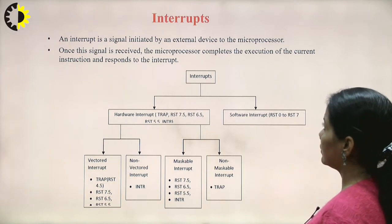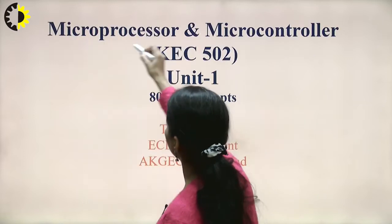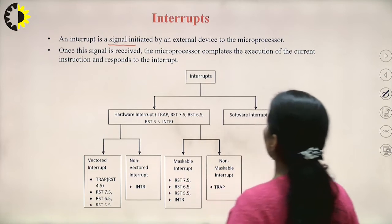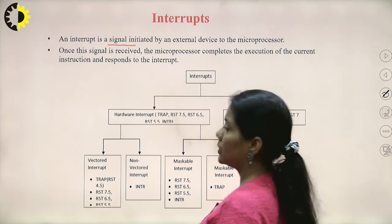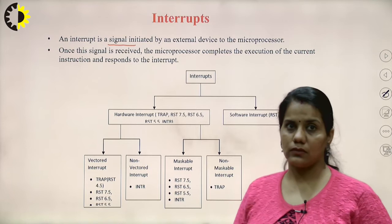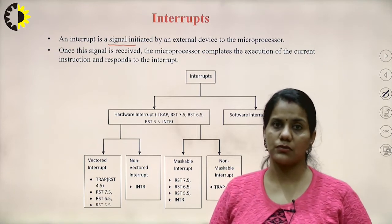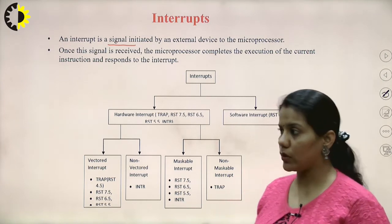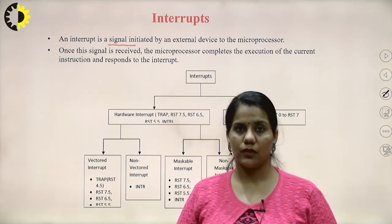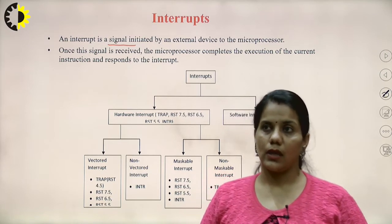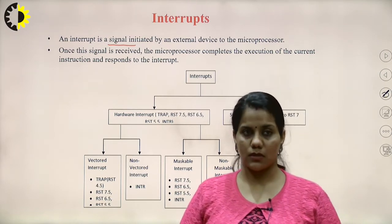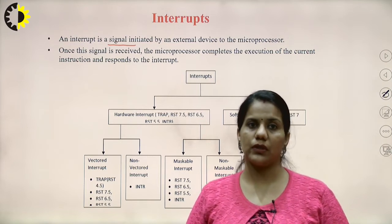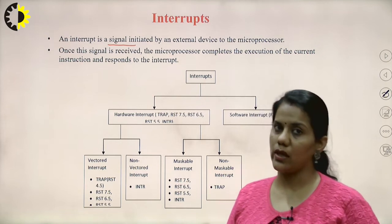An interrupt is a signal initiated by an external device to the microprocessor. Once this signal is received, the microprocessor completes the execution of the current instruction and responds to the interrupt. It is somewhat like a signal which interrupts the main program in between and has such priority that it must be executed, after which the program returns to its normal execution routine.